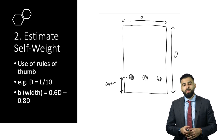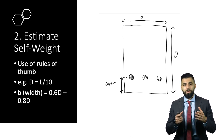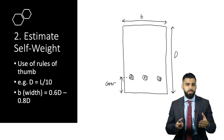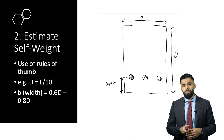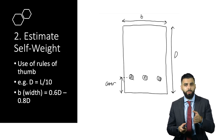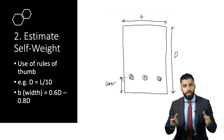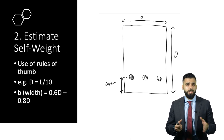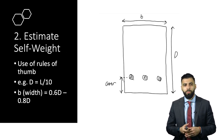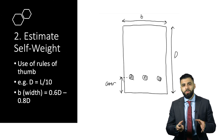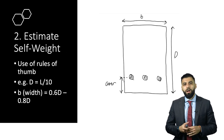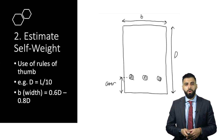The second step is to estimate the self-weight of your concrete beam. Designers usually adopt rules of thumb. For example, the depth D is estimated as the beam length L divided by 10 — that's roughly the depth they start with. You also estimate the width, which can be obtained as 0.6 to 0.8 multiplied by the depth calculated in the previous step.